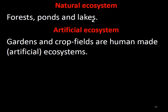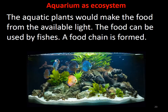What are the two types of ecosystem? Natural ecosystems are nature-made, for example forests, ponds, and lakes. Artificial ecosystems are human-made, for example gardens, crop fields — that is agriculture — and even the aquarium which you keep at home.